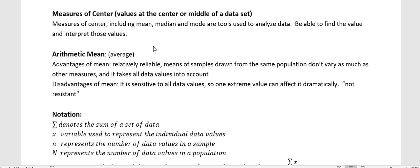The advantages of the mean is that it's relatively reliable - means of samples drawn from the same population don't vary as much as other measures, and it takes all the data values into account. The disadvantages of the mean is that it's sensitive to those data values, so one extreme value can affect it dramatically, and we say it's not resistant.